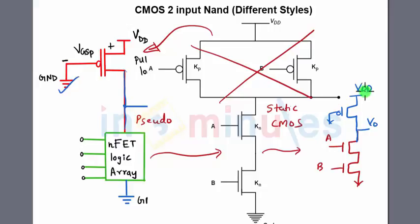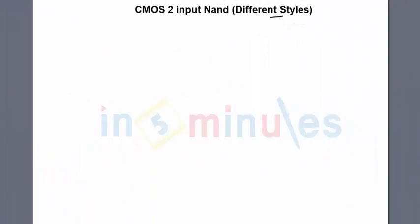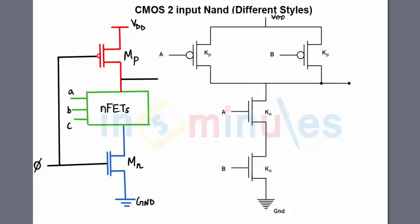The output is taken between the PMOS and the pull-down circuit, so this is my output Vout, connected to VDD at the top. This is my two-input NAND gate in pseudo-NMOS style. You can verify it with the truth table.